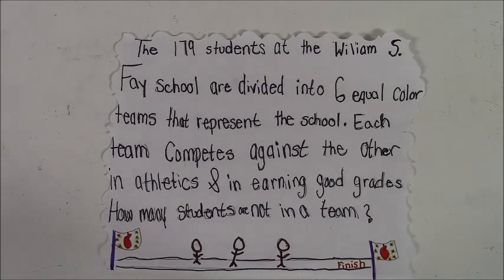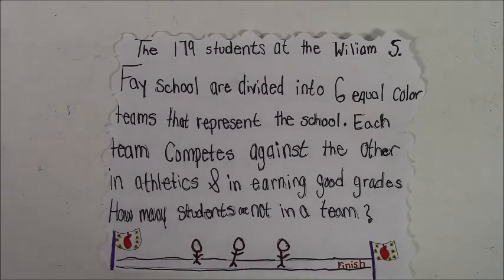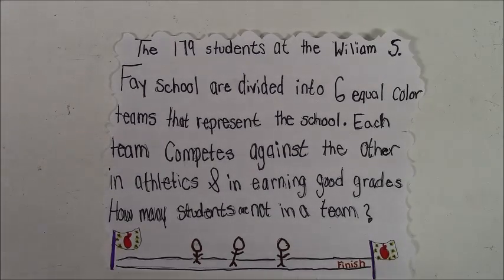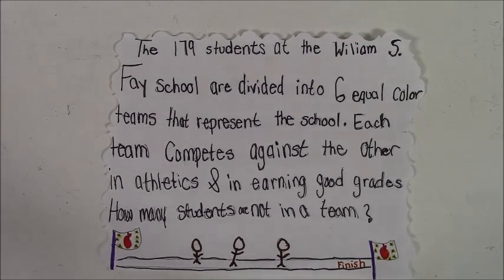The 179 students at the William S. Fay School are divided into six equal color teams that represent the school. Each team competes against the others in athletics and earning good grades. How many students are not in a team?